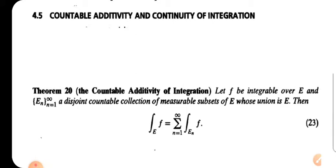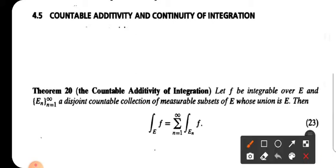Theorem 20: the countable additivity of integration. Let F be integrable over E, and let the collection E_n, n equal to 1 to infinity, be a disjoint countable collection of measurable subsets of E whose union is capital E.